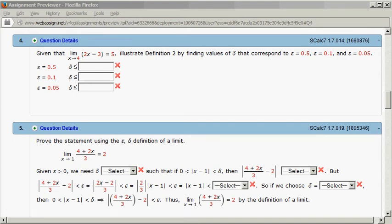Okay, let's look at homework 1.7 problem number four. We have this limit 2x minus 3 as x approaches 4 equals 5, and we want to illustrate the definition by finding the corresponding delta value for these epsilon values.